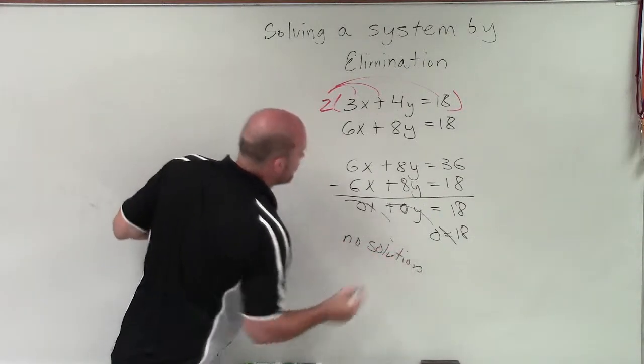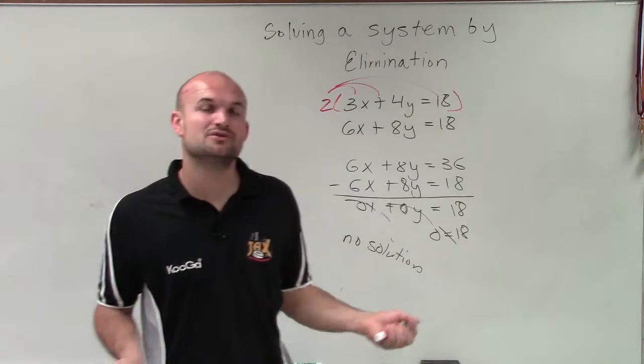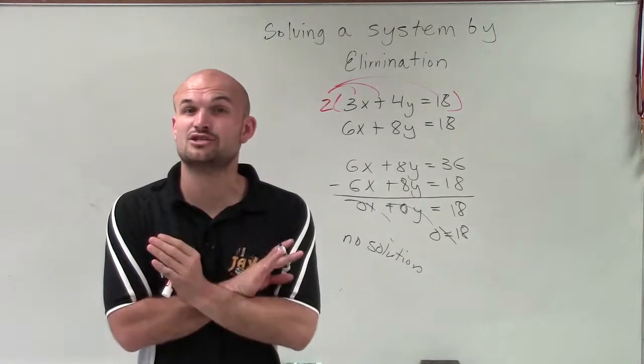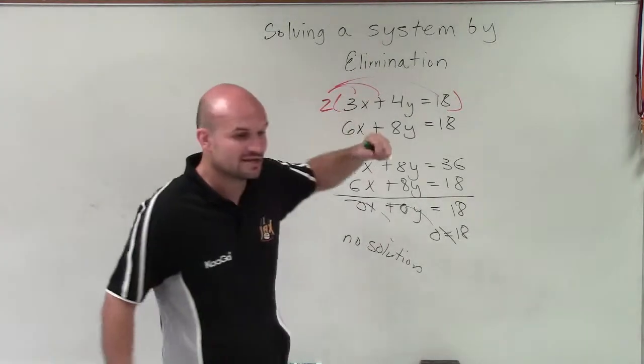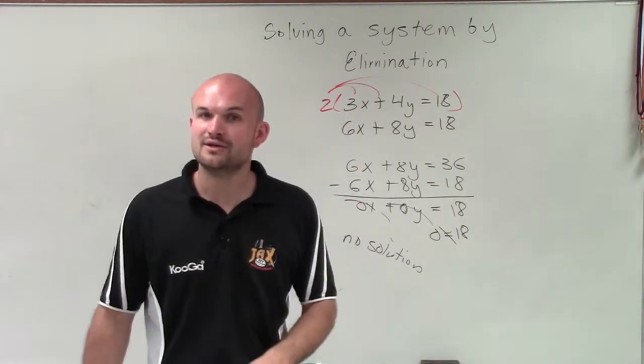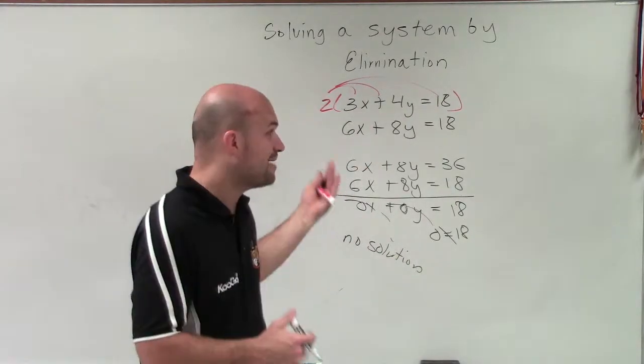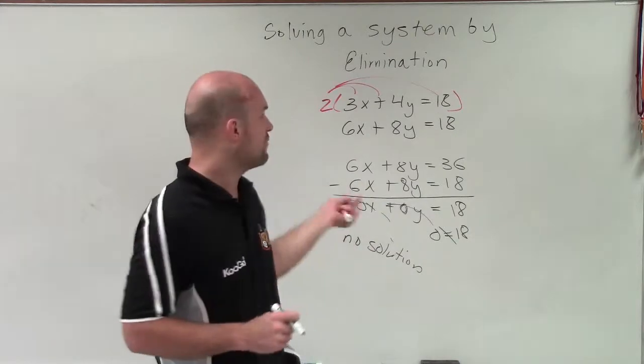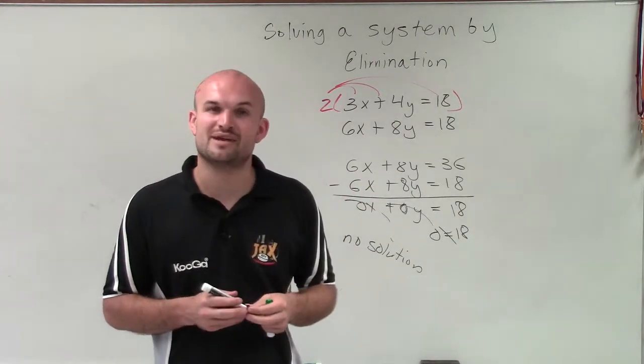How is it possible to have no solution? Remember, our solution is the intersection point of our two lines. If we have two lines that don't intersect, they're parallel lines. So it's possible not to have a solution for our system, and that's how you identify it using elimination. Thanks.